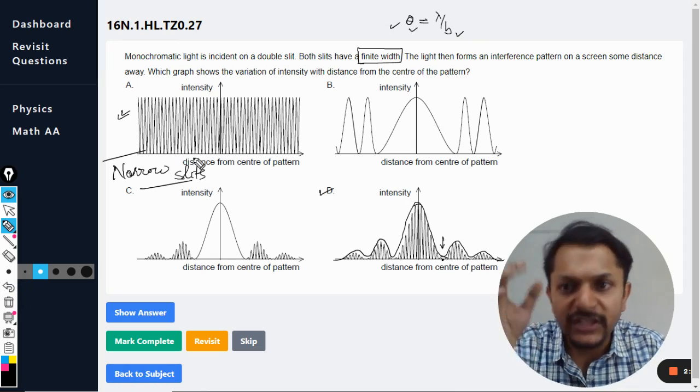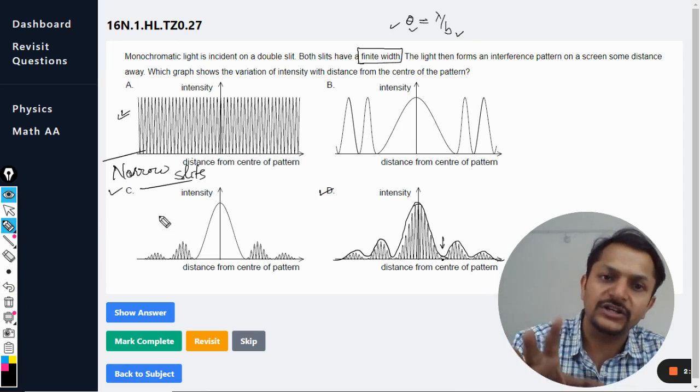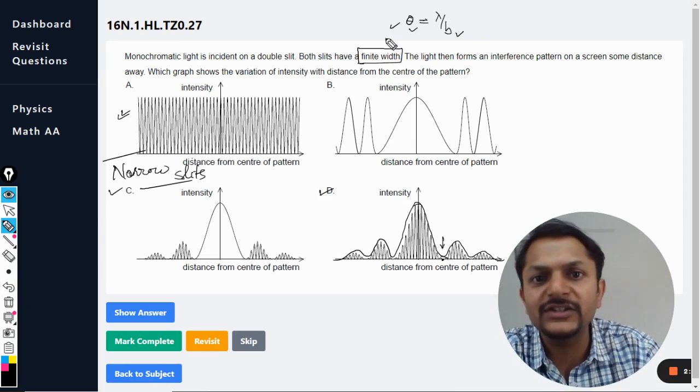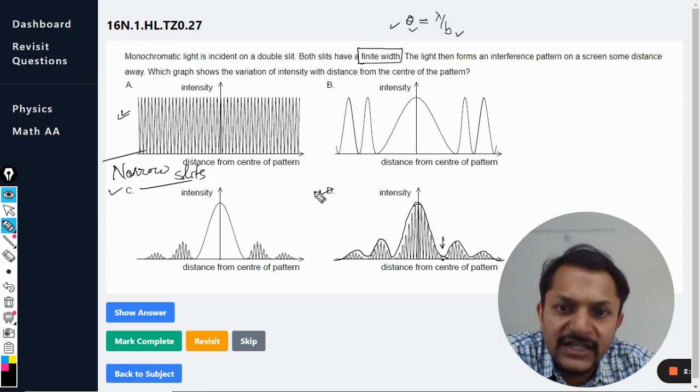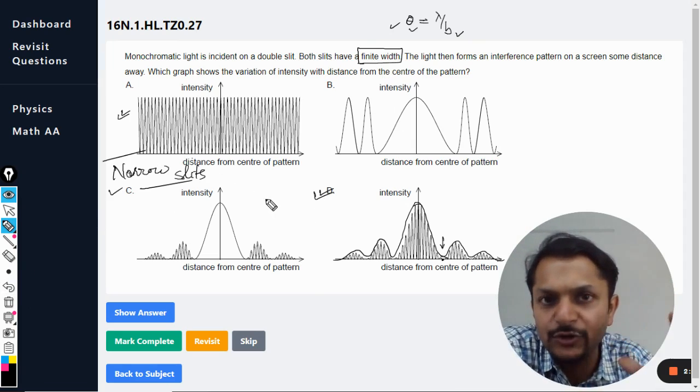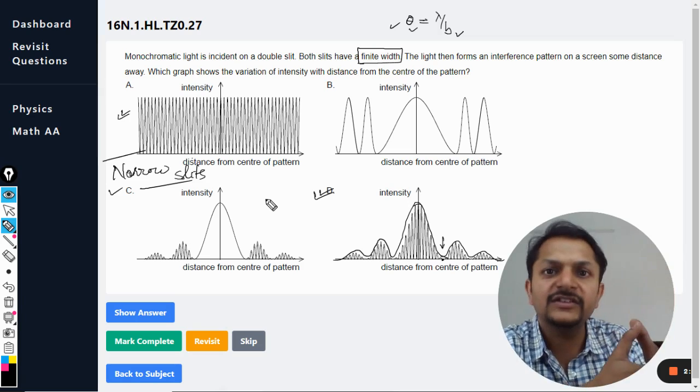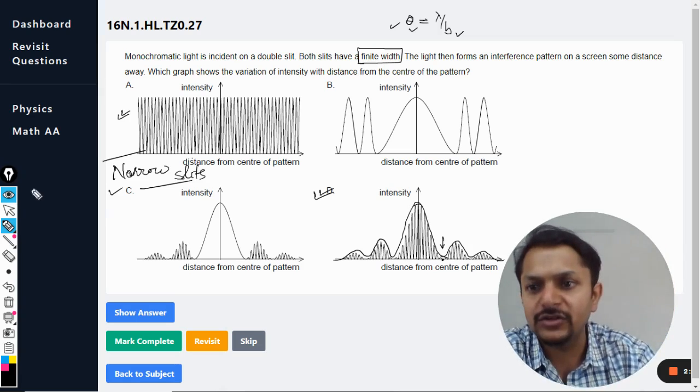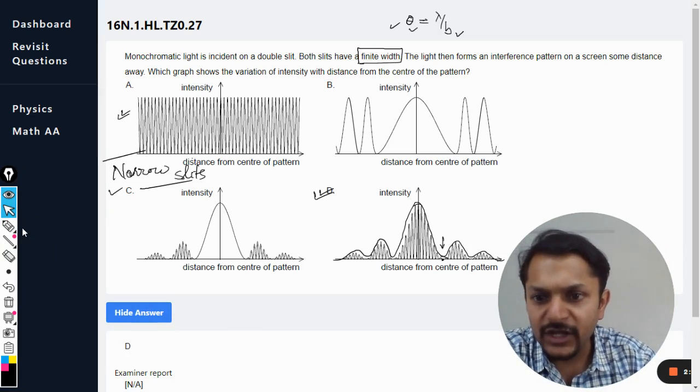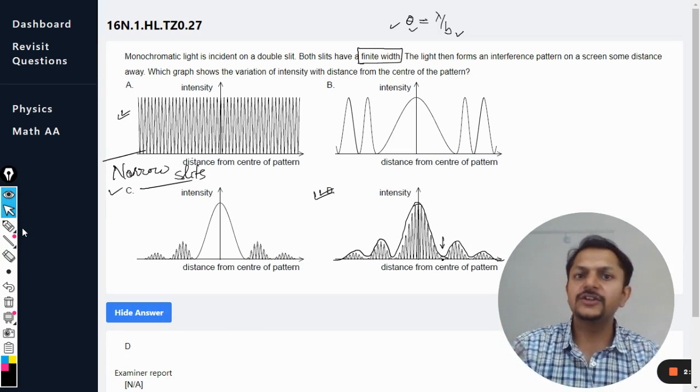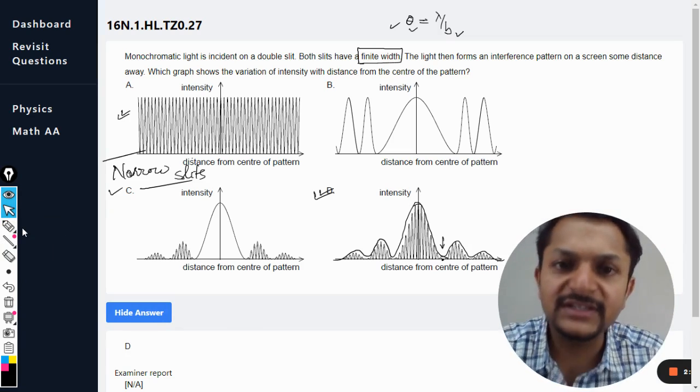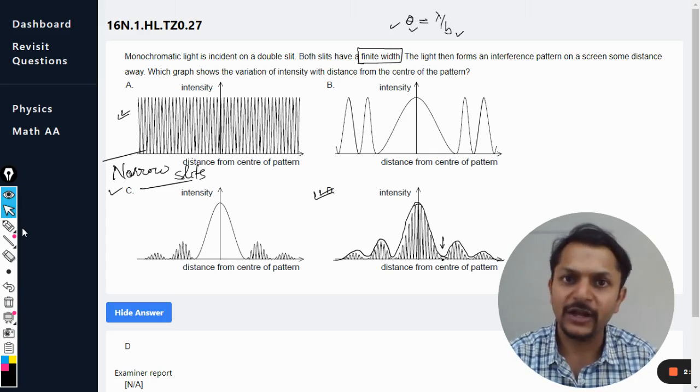So that is why this pattern can be found only in the narrow slits. Overall, if you are having some finite width, this is what is the pattern that is going to happen when interference is overlapped with the diffraction. So the answer will be D clearly. There is no doubt about that. Please subscribe to the YouTube channel. All the best, bye.